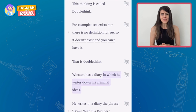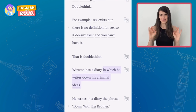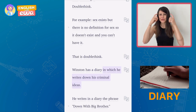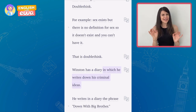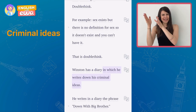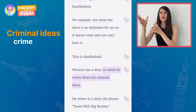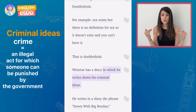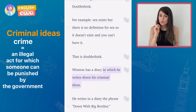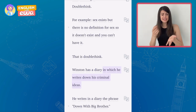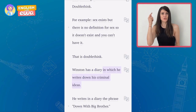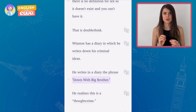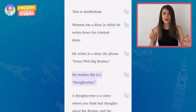Winston has a diary in which he writes down his criminal ideas. A diary is like a notebook where you can write every day about what happens and what you think. Criminal is an adjective that derives from crime. Crimes are things that people do that are illegal — not allowed by the state — and if you do them, you can go to prison. He writes in his diary the phrase 'down with Big Brother' and realizes this is a thought crime.